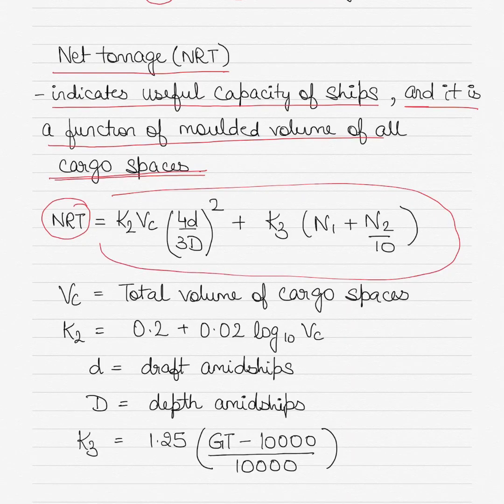The formula that you see written here is K2·Vc multiplied by (4d/3D) squared plus K3 multiplied by (N1 + N2)/10. Now there are a lot of these letters and you must know what each of these letters stand for. So let's start with K2 first. K2 stands for the constant of 0.2 plus 0.02 log of the volume of the cargo spaces, very similar to the constant K1.